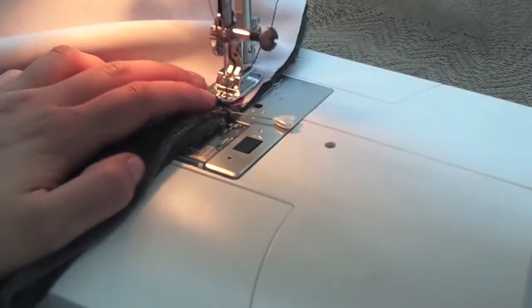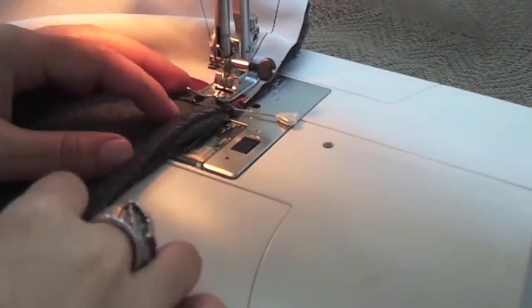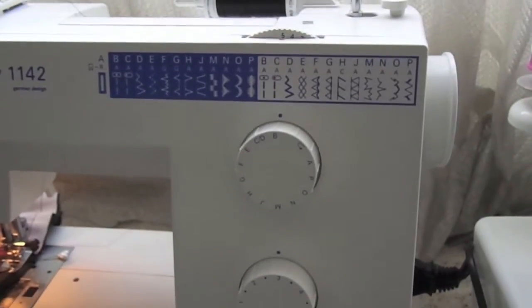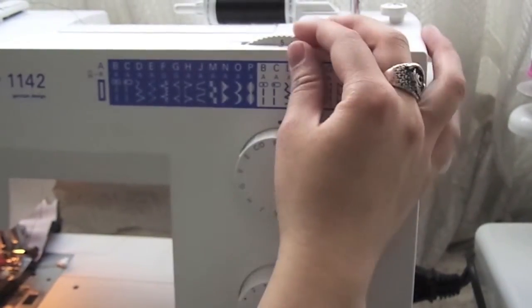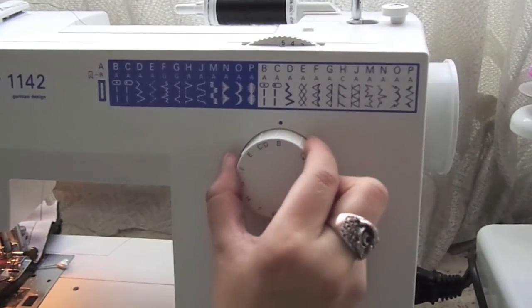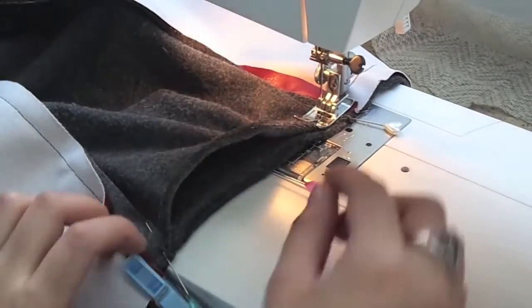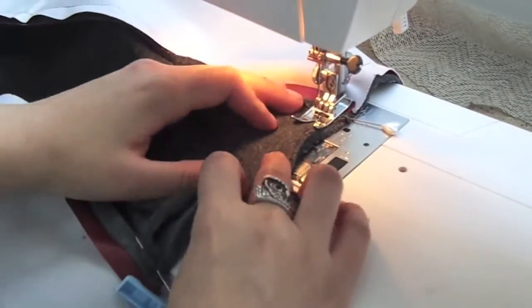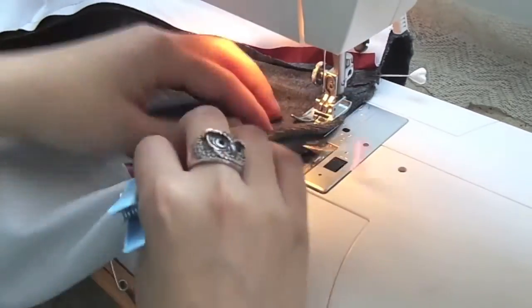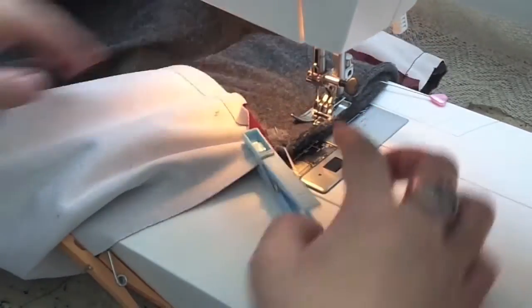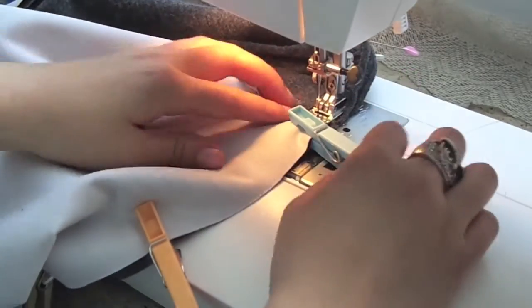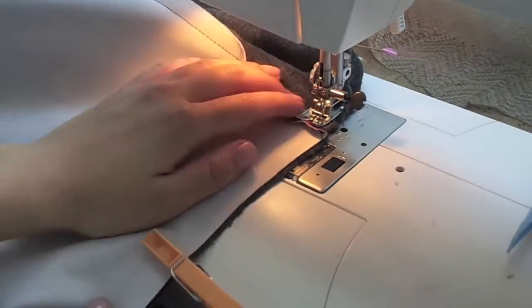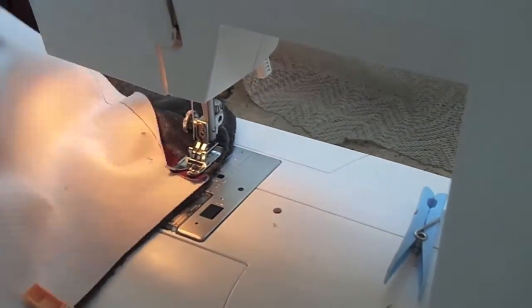So as you can see, to sew the faux leather, I used a straight stitch, and then I went on using a zigzag one for the knit fabric, for the stretchy one. And then while sewing, stretch both of the sides together so that it's flat, nice and still elastic. Then when you come back to the faux leather on the other side, just change back to the straight stitch.